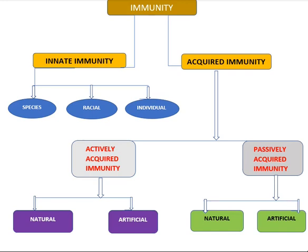In the previous part, we went through the introduction to immunity and the classification of immunity, discussing in detail about the first type of immunity — innate immunity, also called natural immunity — including its types: species, racial, individual, and the mechanism behind innate immunity.